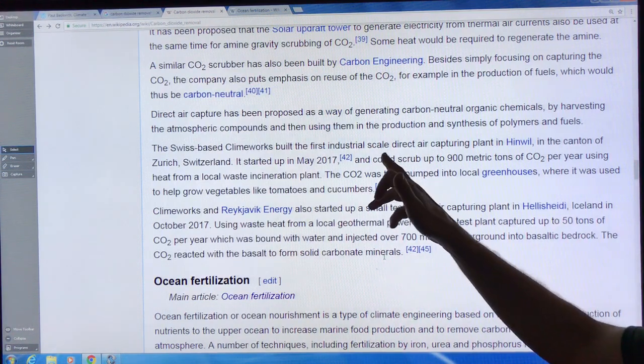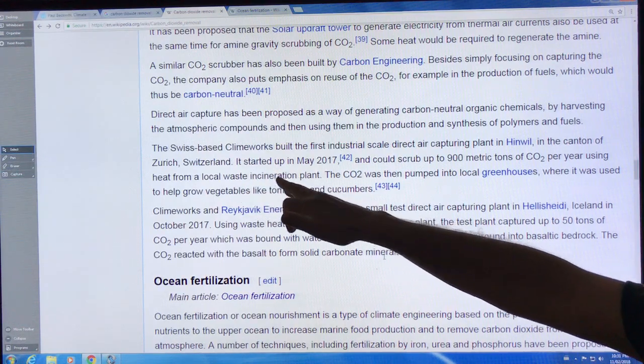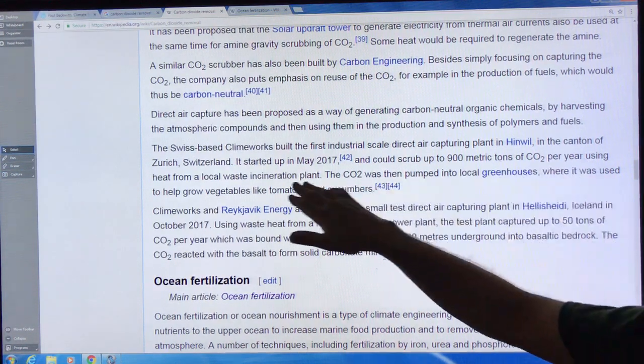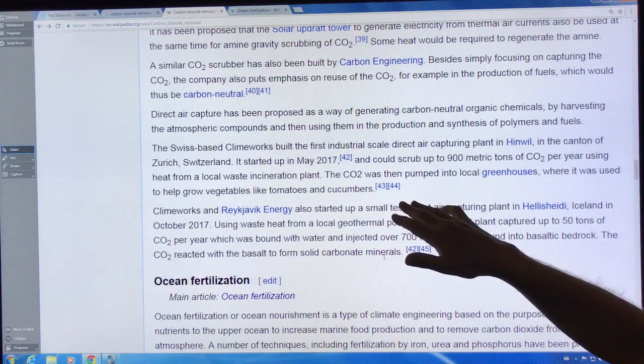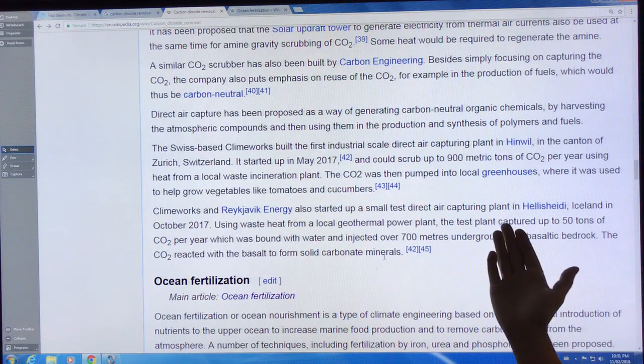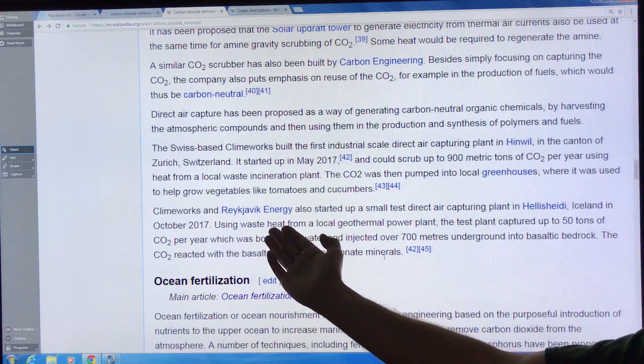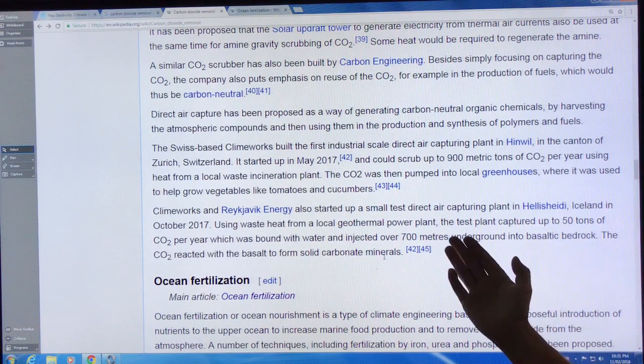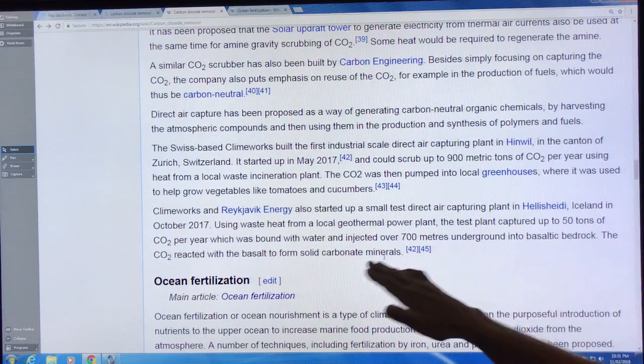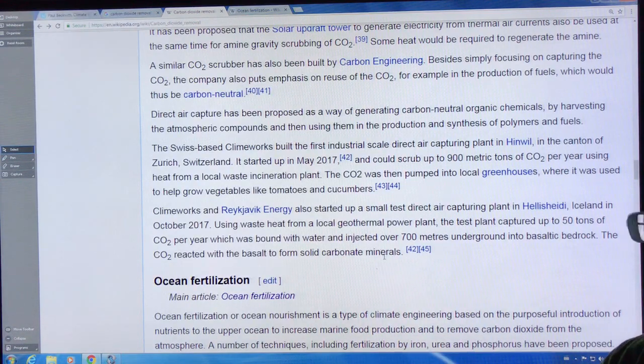Climeworks, a Swiss-based company, built an industrial direct air capture plant in Zurich, Switzerland. It can scrub 900 metric tons of CO2 per year using heat from a local incineration plant. They pumped that CO2 into greenhouses to help grow tomatoes and cucumbers. They teamed up with Reykjavik Energy in Iceland, pumped the CO2 underground into bedrock where it reacted to form solid rock within the space of several years. That worked very well.